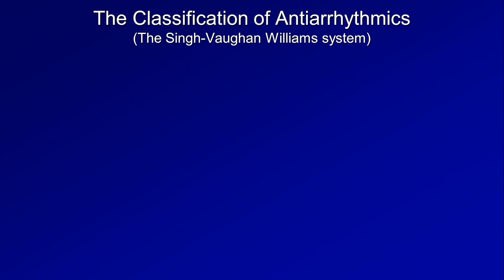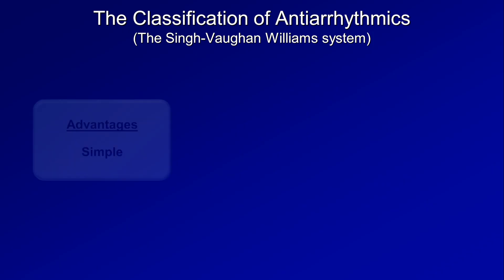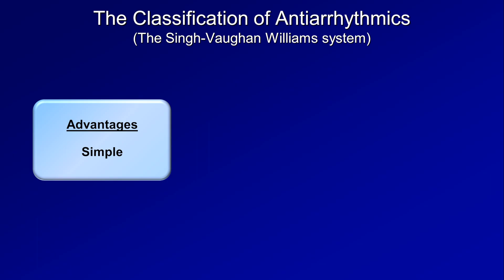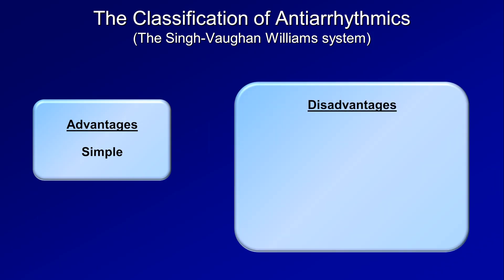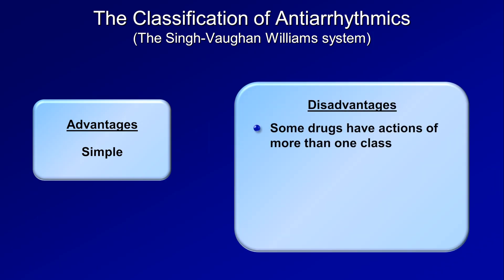This system has advantages and disadvantages. The primary advantage is that it's simple: four fundamental classes based on four distinct mechanisms. Unfortunately, there are some significant disadvantages. First, some drugs have actions of more than one class. Second, some drugs don't fall into a class at all, like adenosine and digoxin.